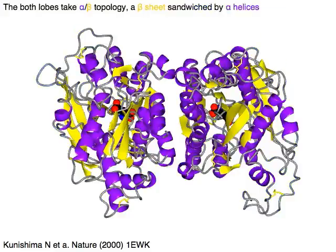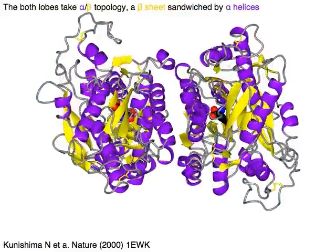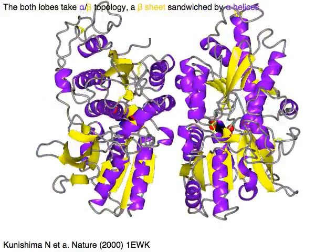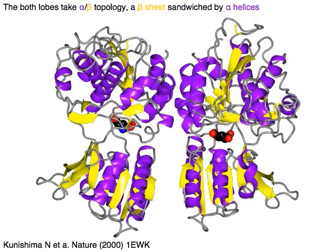Both lobes take an alpha-beta topology: a beta sheet in yellow sandwiched by alpha helices in purple.